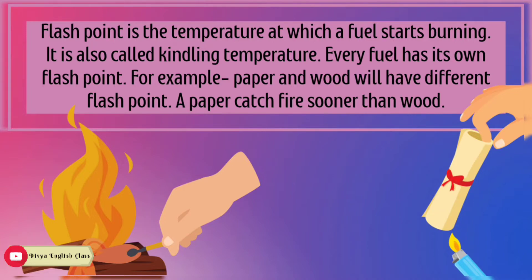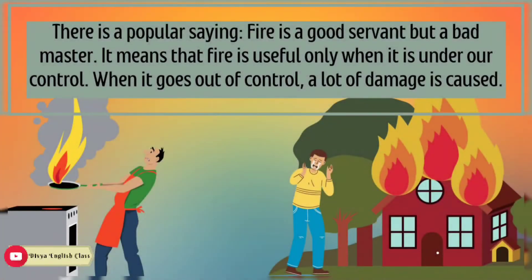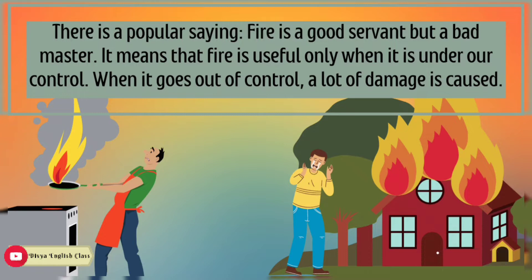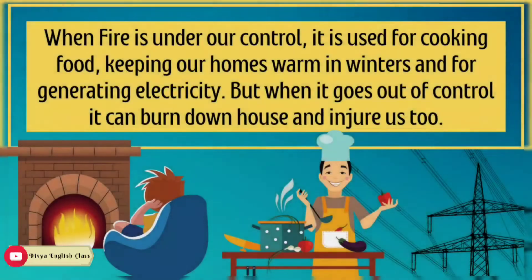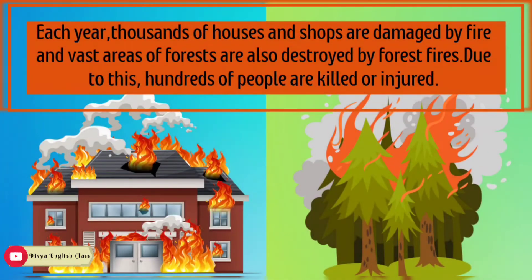A paper catches fire sooner than wood. There is a popular saying: fire is a good servant but a bad master. It means that fire is useful only when it is under our control. When it goes out of control and tries to become a master, a lot of damage is caused. When fire is under our control, it is used for cooking food, keeping our homes warm in winters, and for generating electricity. But when it goes out of control, it can burn down houses and injure us. Each year, thousands of houses and shops are damaged by fire, and vast areas of forests are destroyed by forest fires, killing or injuring hundreds of people.